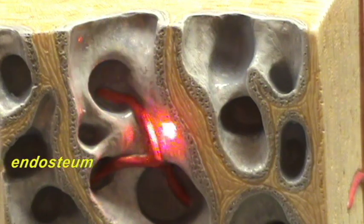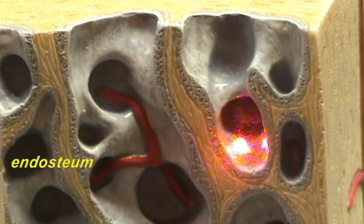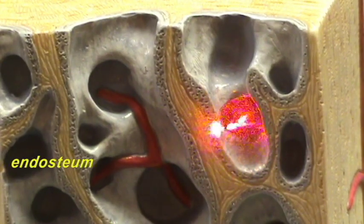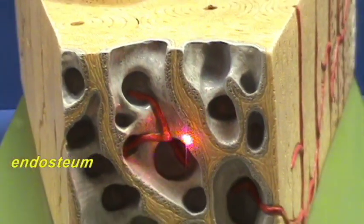So this gray represents the endosteum. And the pattern of bone that you're seeing here is spongy bone.